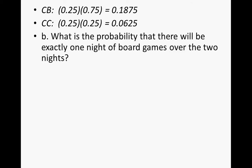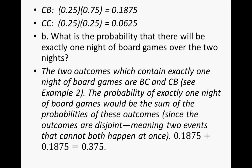For Part B: what is the probability that there will be exactly one night of board games over the two nights? The two outcomes containing exactly one night of board games are BC and CB. Since these outcomes are disjoint — meaning two events cannot happen at the same time — the probability is the sum of their probabilities: 0.1875 plus 0.1875 equals 0.375, or 37.5%.